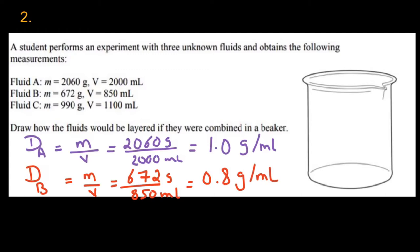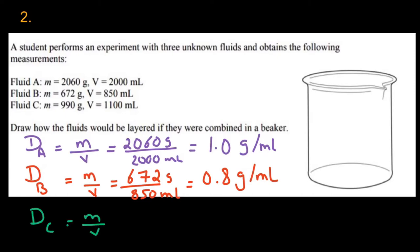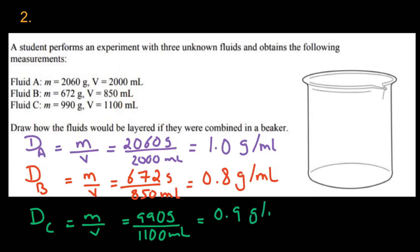Now moving on to the last one: density for C = M ÷ V = 990 grams divided by 1100 milliliters. The answer is 0.9 grams per milliliter.